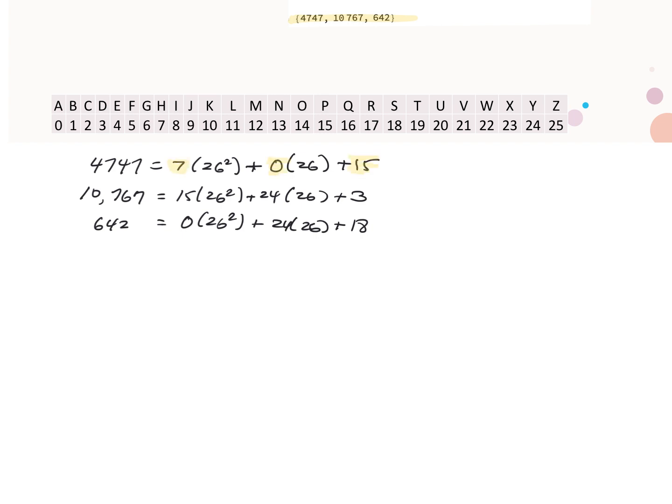Now we're going to look up the letter codes corresponding to these coefficients, 7, 0, and 15. And our 7 gives us H, our 0 gives us A, and our 15 gives us P.